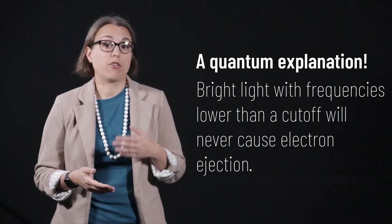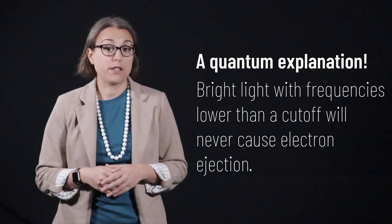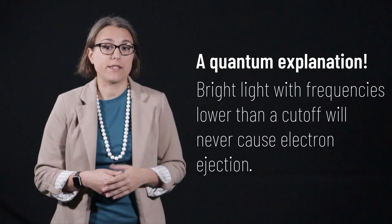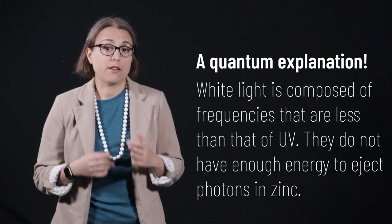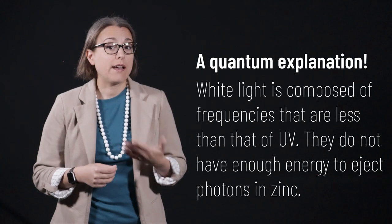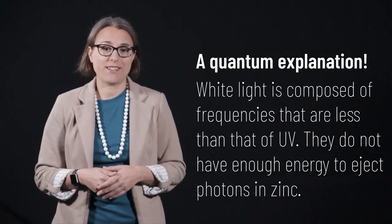In this manner, bright light at frequencies that are lower than a threshold energy will never cause electron ejection, which is what we observed when shining bright white light on the zinc. Each photon of white light was incapable of ejecting an electron, as white light is composed of frequencies of light that are lower than that of UV light.